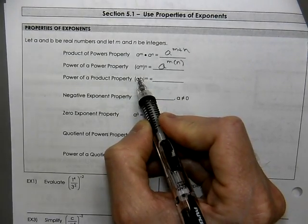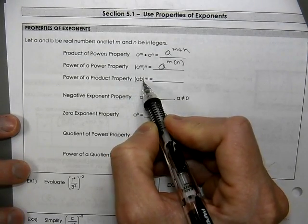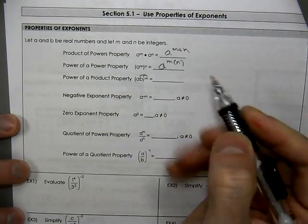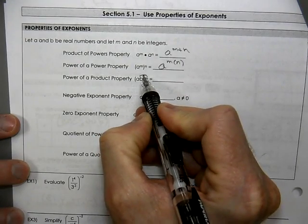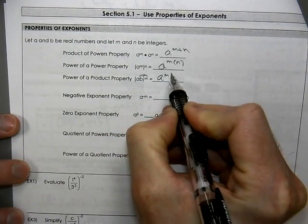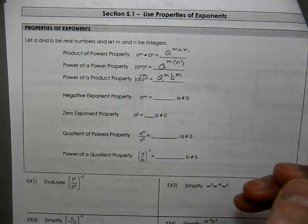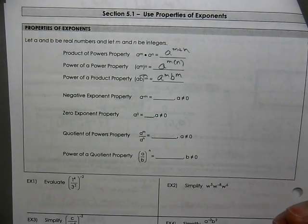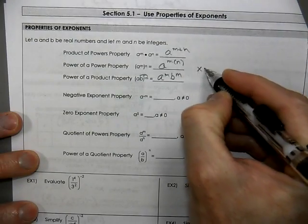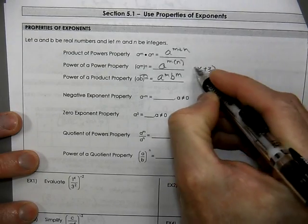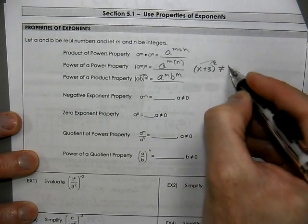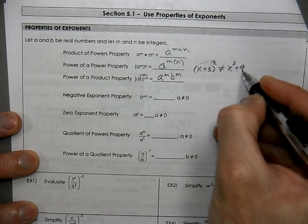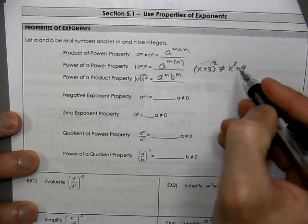When you have parentheses with an exponent on the outside, you can distribute that exponent to each of the inside exponents. Since they're not written, that means they're both a one, so this is A to the M times B to the M. Don't get that confused with distributing into a binomial — if you have (x + 3) squared, that is not the same as x squared plus 9.